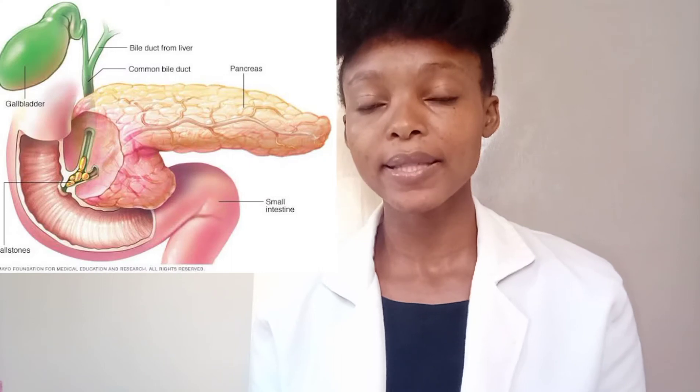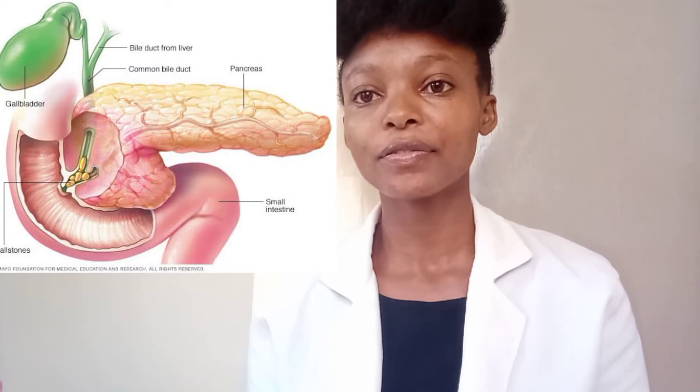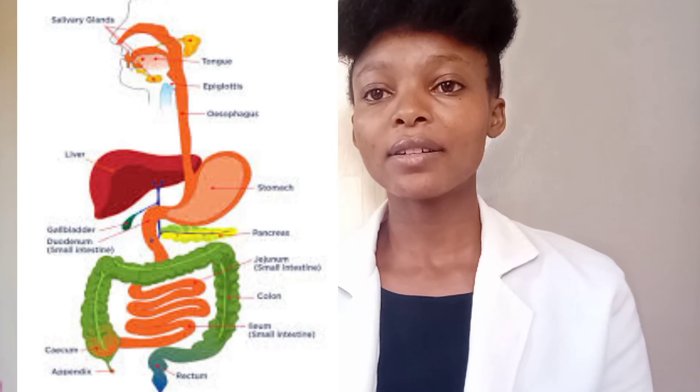For digestion, we all have an organ called the pancreas, which is responsible for producing digestive enzymes that aid in digestion. In an alcoholic person, pancreatic function declines, resulting in reduced enzyme production. For absorption, alcohol irritates the gut wall and can lead to ulceration — what we call ulcers — meaning nutrients that would have been absorbed within the intestinal mucosa are not absorbed optimally.